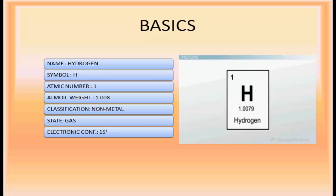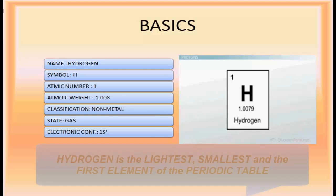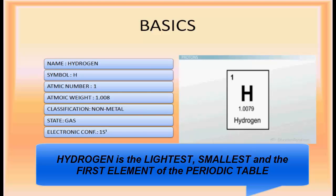The basic information about hydrogen: its name is hydrogen with the symbol H, atomic number 1, atomic weight 1.008. It is classified as a non-metal and is mainly found in the gaseous state. The electronic configuration of hydrogen is 1s1, making it an s-block element.